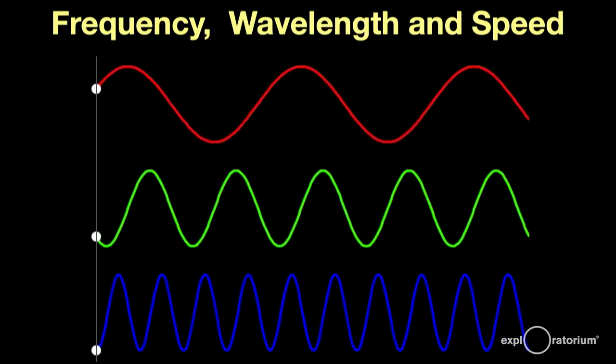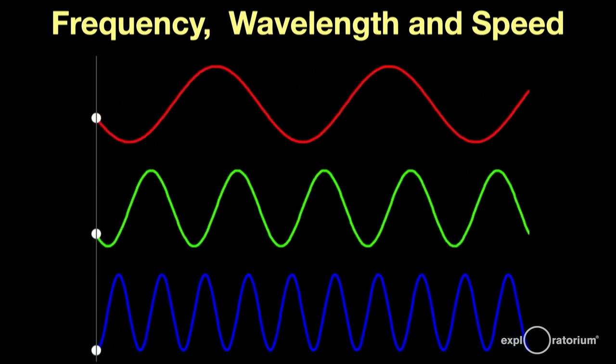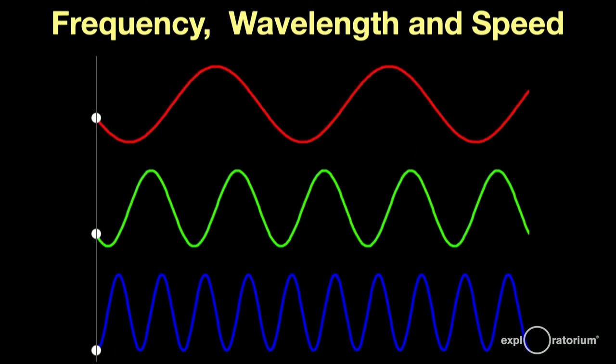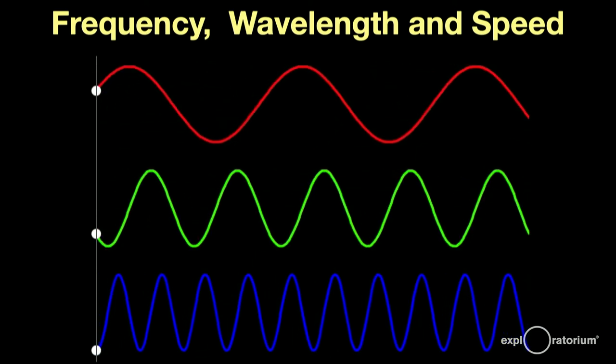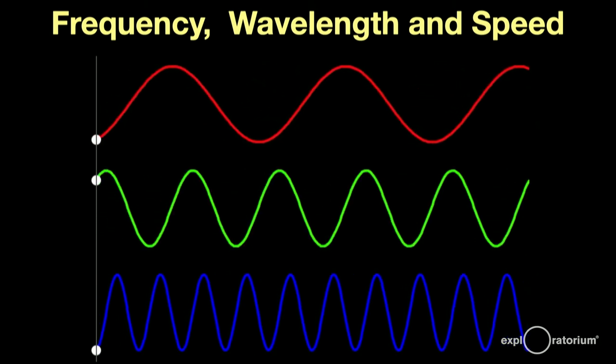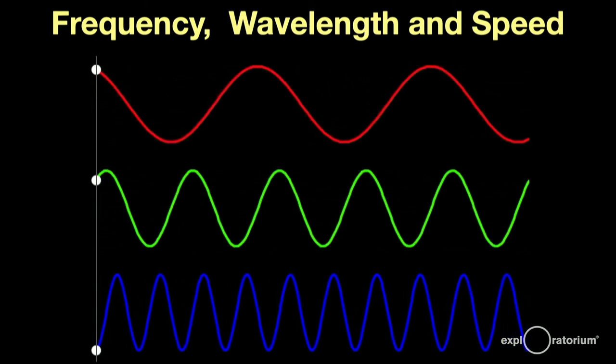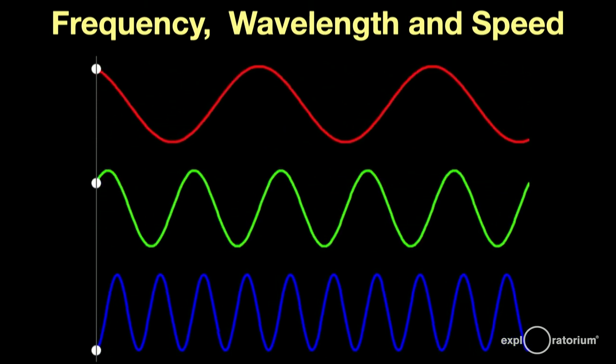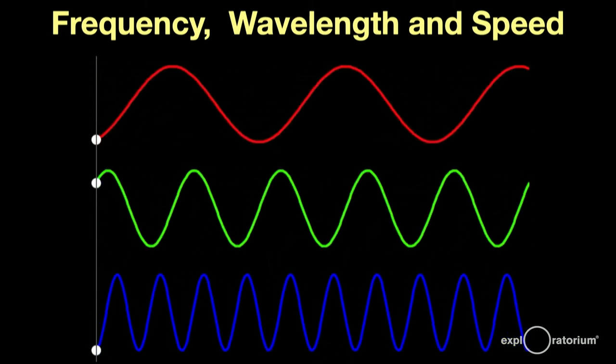All white waves travel at the same speed, the speed of light. That means that the slower vibrating light, red, produces long wavelength waves, and faster vibrating light, blue and violet, produce shorter wavelength waves. There's a simple, direct, and proportional relationship between the frequency and the wavelength.